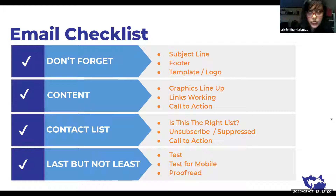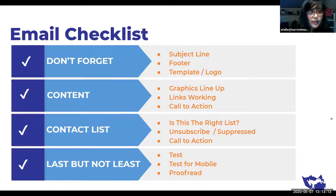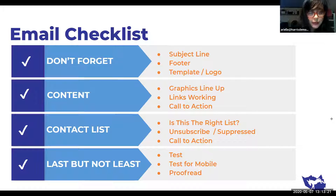So this is our checklist — we're going to send this out. It's something to go through before you send an email, especially if it's to 100 people or a large group. You want to make sure everything looks good and all your links are right. I've made the mistake of linking the wrong phone bank in emails before, so you just want to double-check everything before you send it.